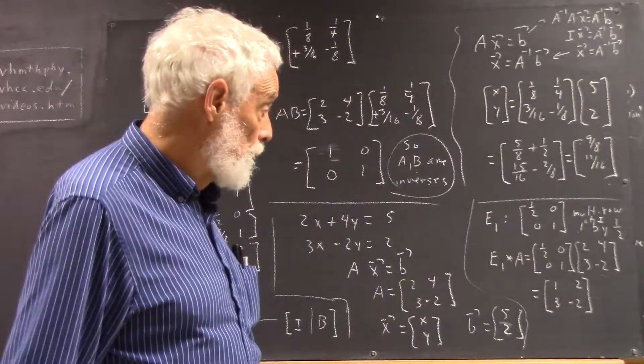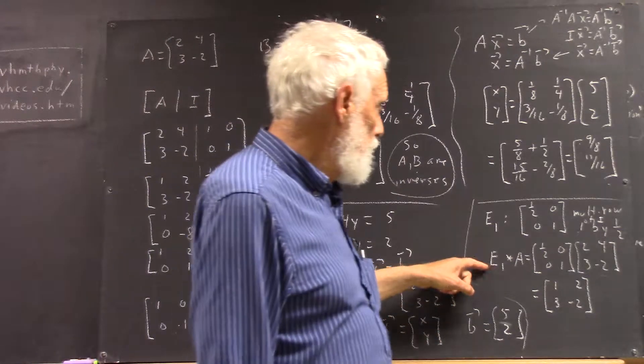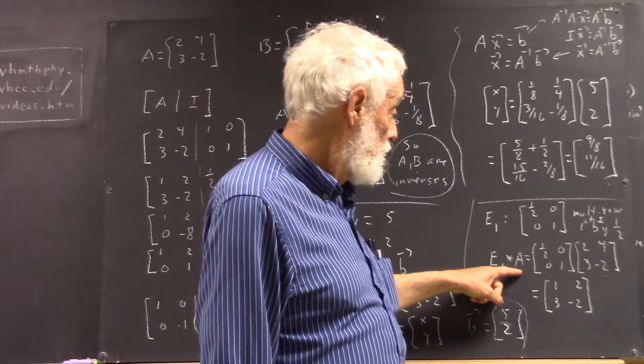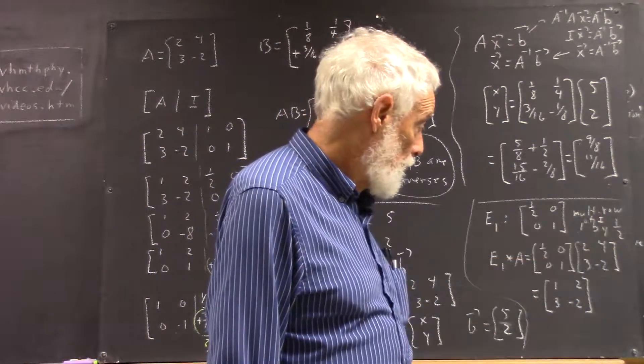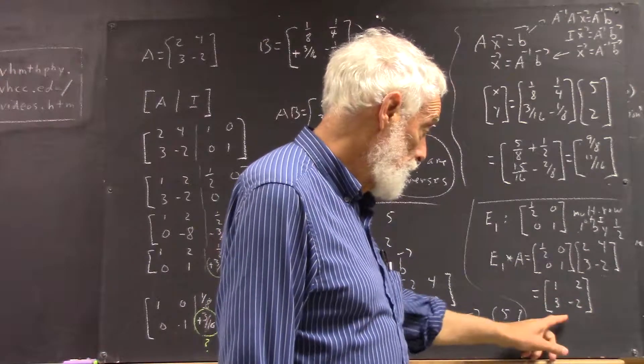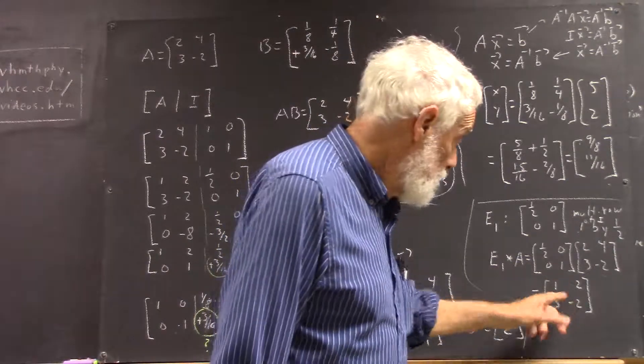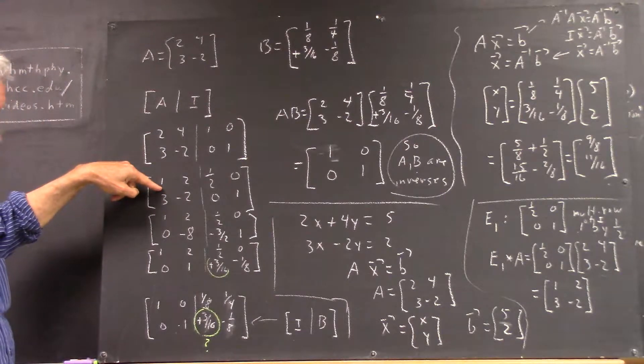Then we multiply E1 by our A matrix, and you can verify this product. Here's E1, here's the A matrix, and here's the result. And this result matches what we have here, doesn't it?